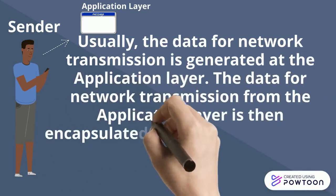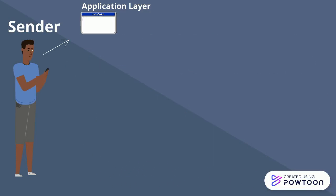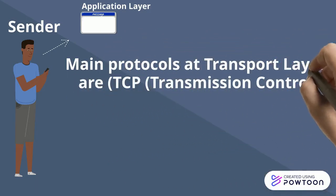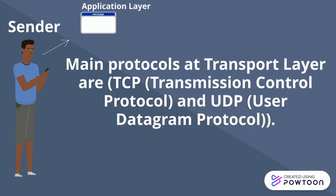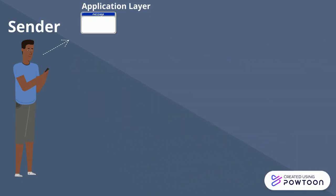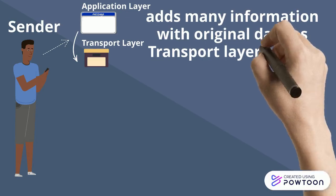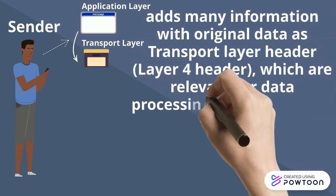The data is then encapsulated at its lower layer, which is the transport layer. The main protocols at the transport layer are TCP and UDP, or User Datagram Protocol. The data generated at the application layer is then passed down to the transport layer, which is our fourth layer. It adds management information with the original data as the transport layer header, which is relevant for data processing at the transport layer.